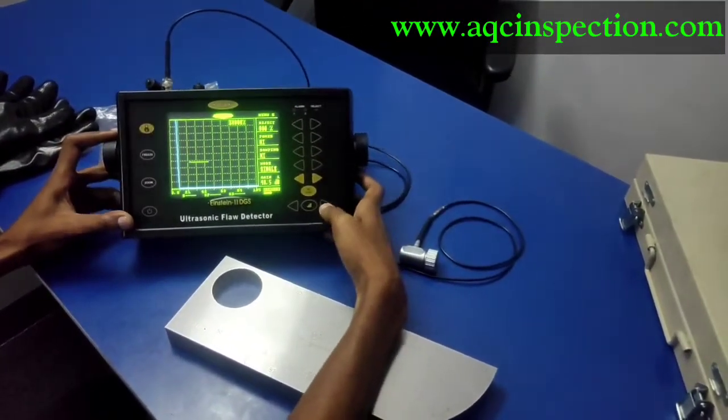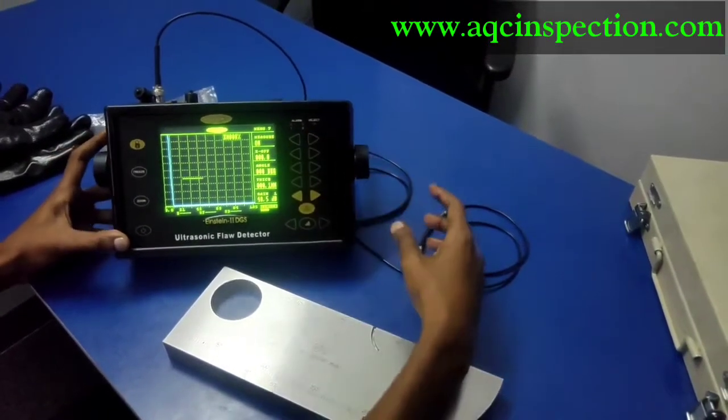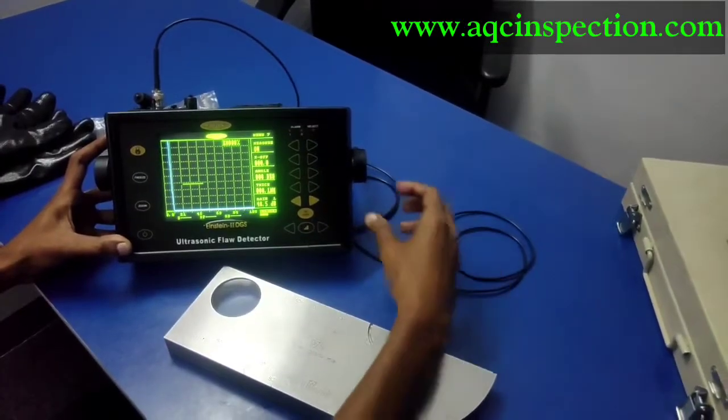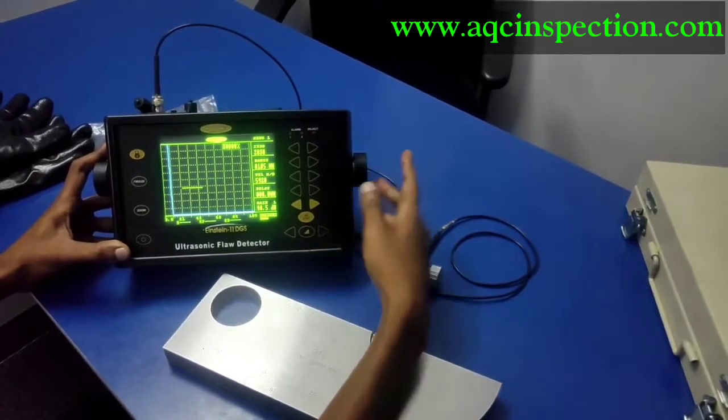Then you can see everything is zero. Since we are not using angle probe, we are using only a single crystal probe. Everything is zero. That's it. Let's start.